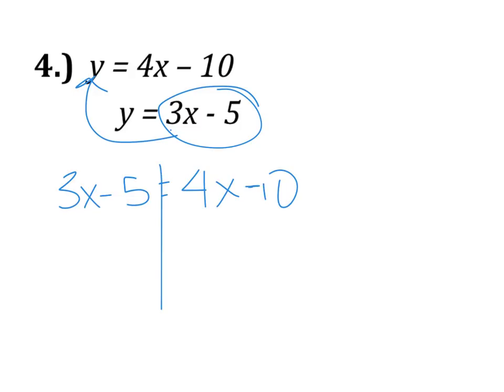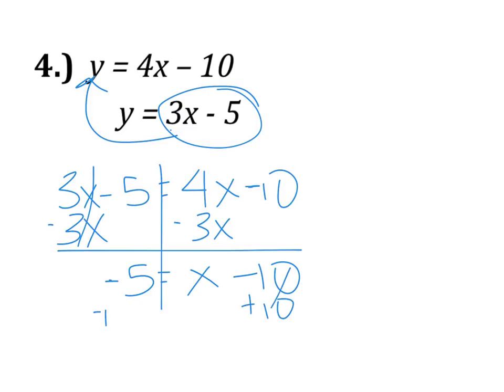We're going to draw the line down the equal sign. We are going to solve, and again, you could do this a variety of ways. I'm going to start by bringing 3X over. So I have negative 5 equals 1X, or just X minus 10. And then I'm going to add 10 to both sides.